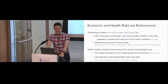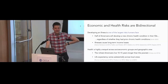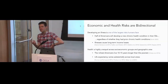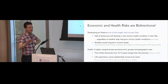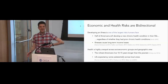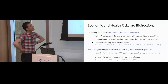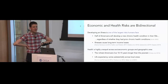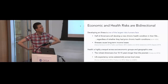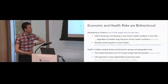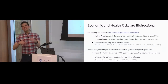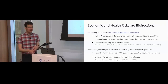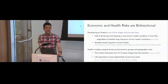One of the things that makes health inequality both interesting and challenging to study is the bidirectional relationship between socioeconomic status and health. Among the many risks we all face, developing an illness is just a very human risk. About half of Americans will develop a new chronic condition in their 50s, independent of whether they had prior chronic health conditions. Illness is more likely for people with lower socioeconomic status, and illness is also a source of lower socioeconomic status.